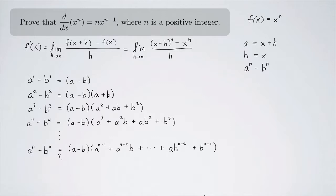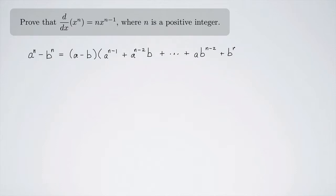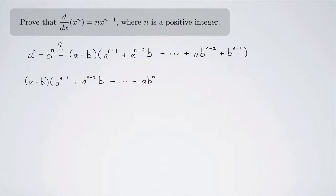Let's explore whether a to the n minus b to the n equals a minus b times a to the n minus 1 plus a to the n minus 2 times b plus dot dot dot plus a times b to the n minus 2 plus b to the n minus 1. Let's multiply out the right-hand side to check.